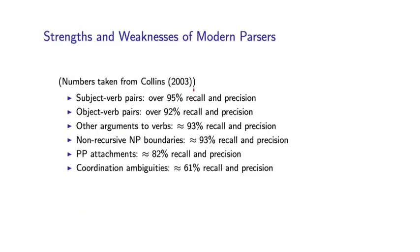And here are some numbers. So in fact, if we look at subject-verb pairs, so this is dependency of the following form, we do pretty well on these. We get over 95% recall and precision.